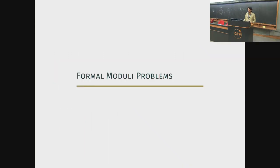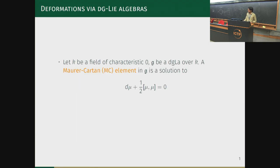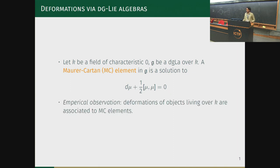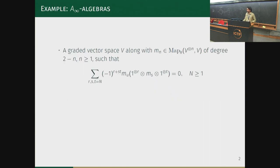To begin, I'll recall some aspects of deformation theory. If k is a field of characteristic zero and g is a dg Lie algebra over k, then a Maurer-Cartan element in g is defined to be a solution to the equation on screen. It is known that deformations of objects living over k are associated to Maurer-Cartan elements in a dg Lie algebra over k.